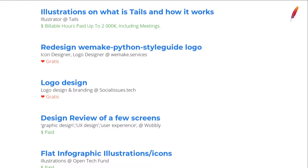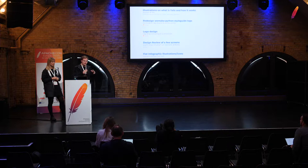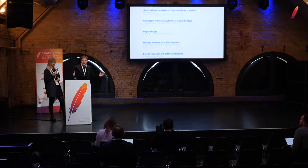We do events like this open source design track at ApacheCon, we have a forum, and we organize a summit. One of the most successful things we do is the job board. It's a small screenshot — just a tiny percentage of what's listed there. Wikimedia posts actual jobs you can apply to. There are paid jobs, free jobs, logo design requests, full UX reviews, usability testing, and all kinds of things. If you maintain an open source project and need design help, you can just post a job there.